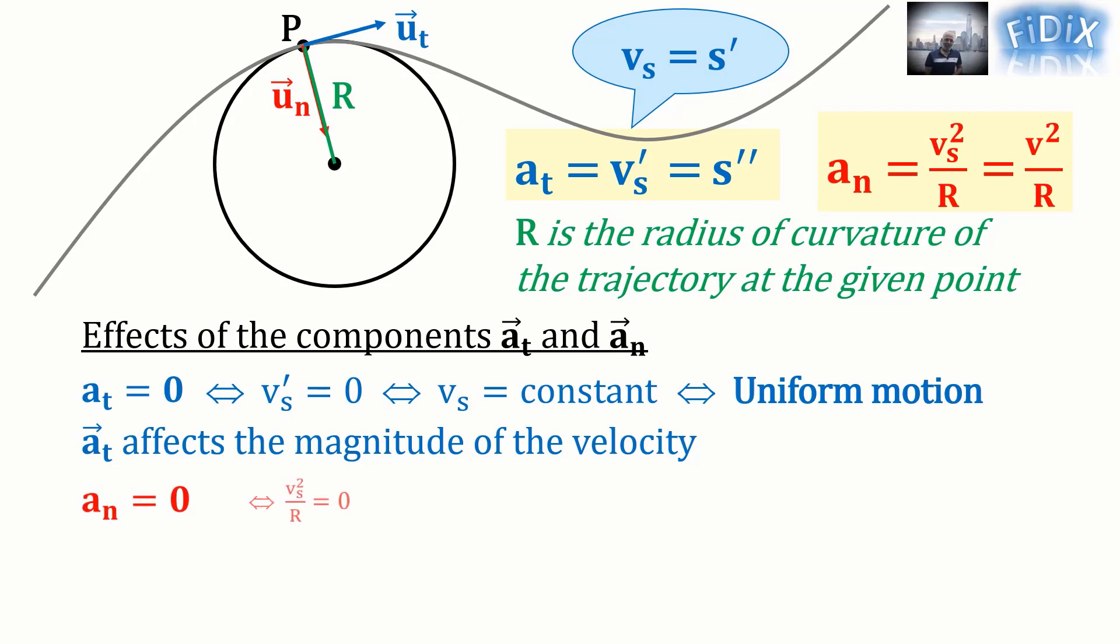If a_n = 0, then v_s squared over R is equal to 0. But since we are talking about a moving particle, v_s is different from 0. This leads to R equals infinity, which means that the trajectory is a straight line.